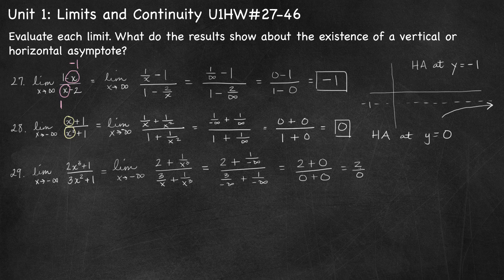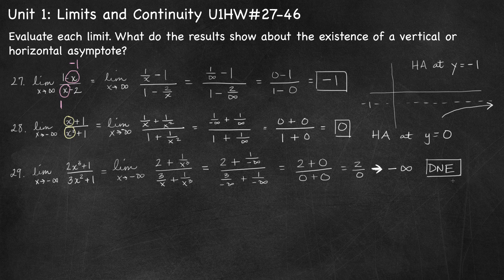Since 2 over 0 is undefined, this is going to approach positive or negative infinity depending on the signs. Approaching negative infinity, the numerator is negative, and since we have x squared in the denominator it will be positive — negative over positive is negative. So this is approaching negative infinity, and therefore the limit does not exist. We did not get a finite limit, so there is no horizontal asymptote.